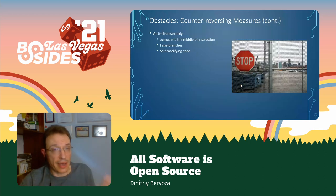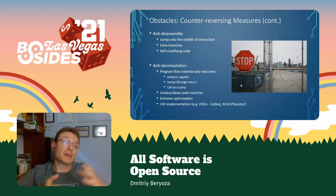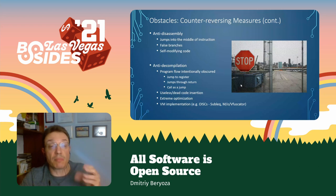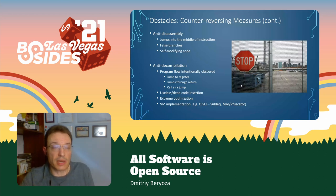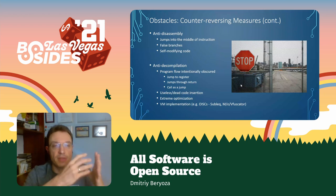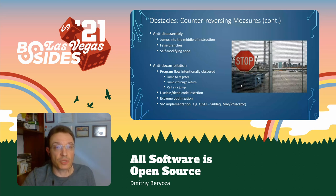There are anti-disassembly methods such as jumps into the middle of an instruction, false branches — these confuse disassemblers. And there are anti-decompilation methods: obscuring of program flow, useless dead code, extreme optimization. Some tools actually implement a new VM with a new instruction set, compiling the original application into that instruction set, and that mini-VM executes the application. So things can get really, really obscure.